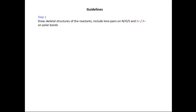In step one, we're going to draw skeletal structures of the reactants, including lone pairs on nitrogen, oxygen and sulfur, and delta plus and delta minus on any polar bonds.